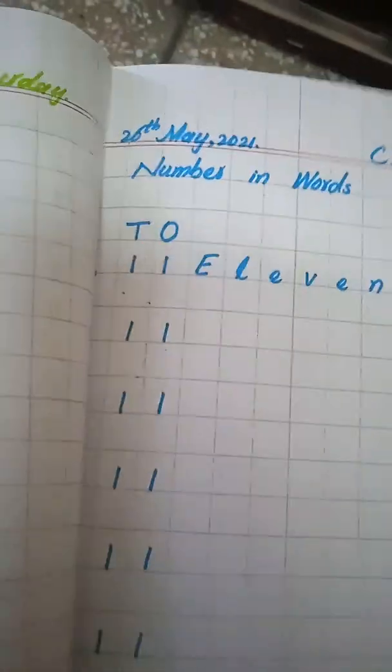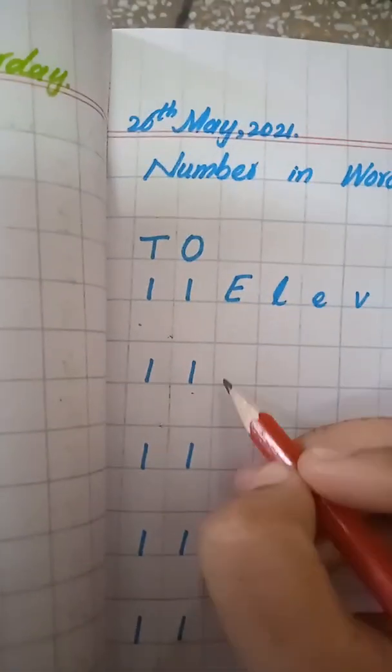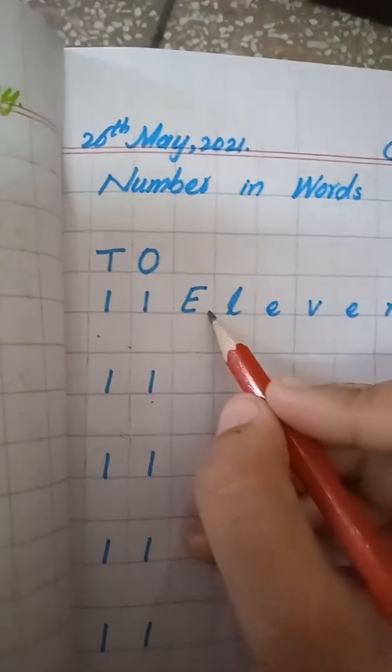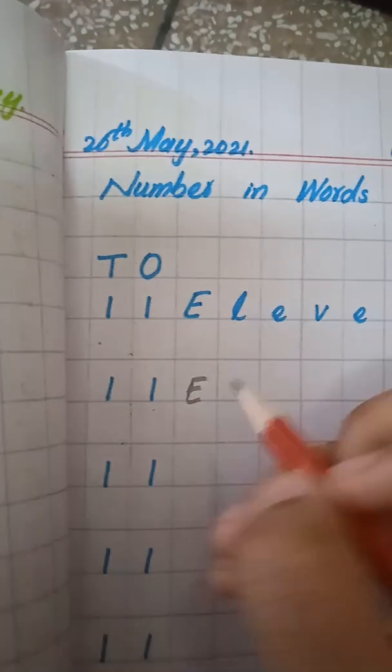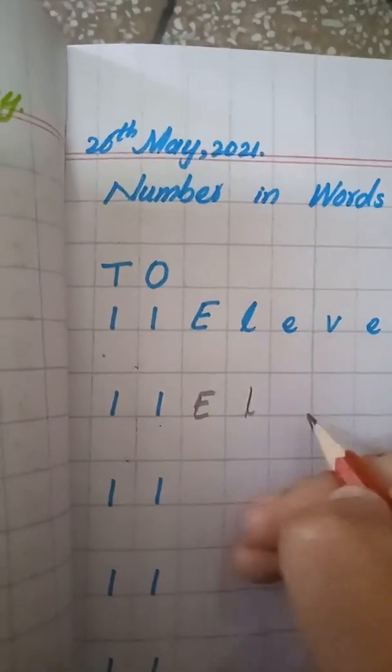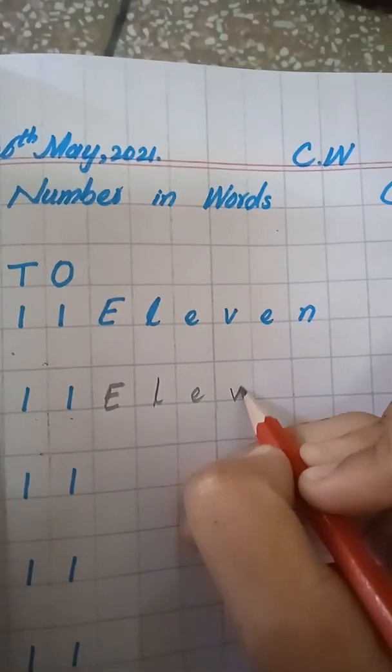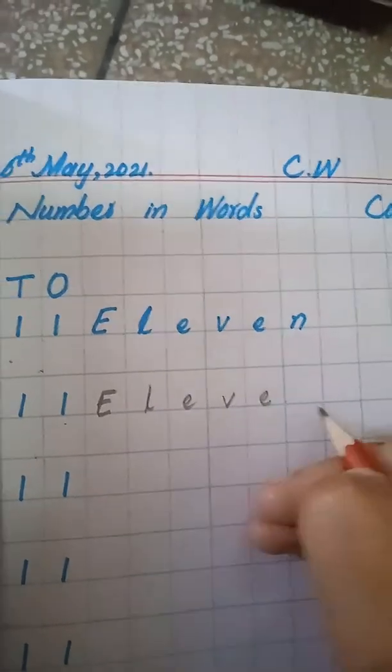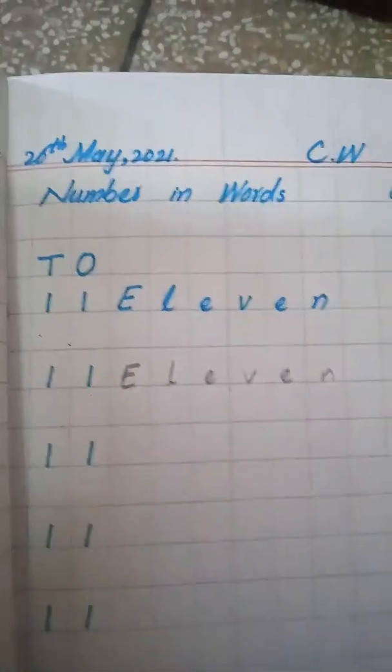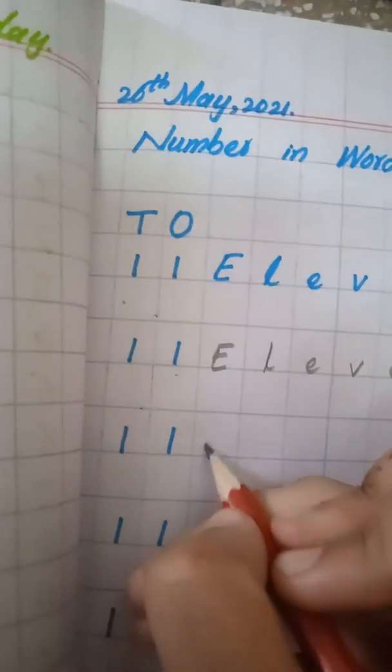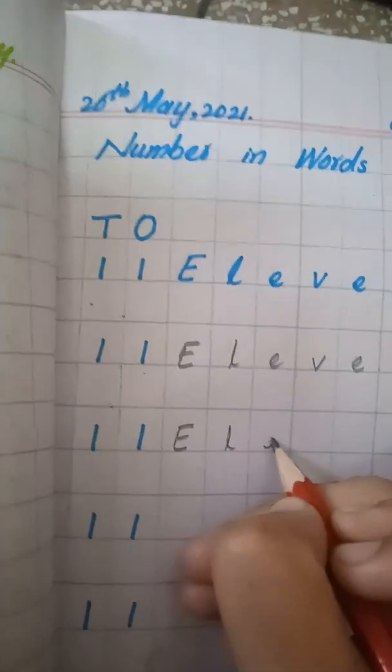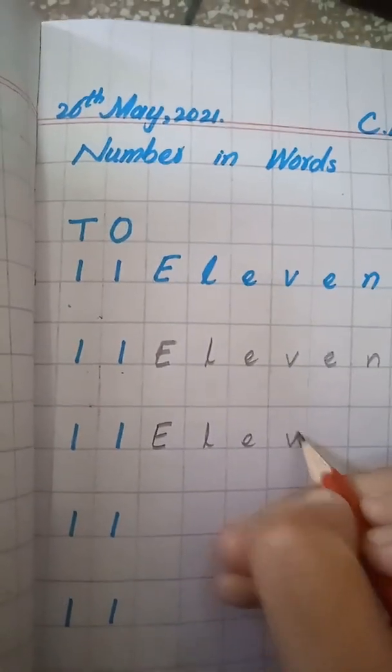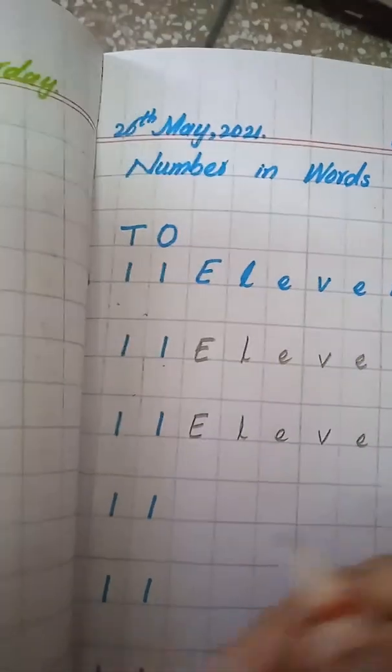Today we will learn number in words: 11. Here I have write 11. You just copy the alphabets. E, L, E, V, E, N. 11. E, L, E, V, E, N. 11.